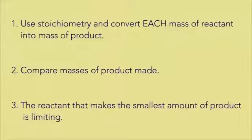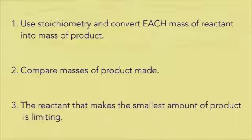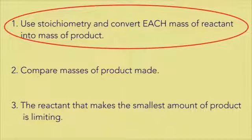Any time you're given the masses for both reactants, you know you're dealing with a limiting reactant problem. Let's break this down into smaller pieces. You'll see it's not so bad. Here are three easy steps to complete this type of problem. Let's start with step one. Use stoichiometry and convert each mass of reactant into mass of product.